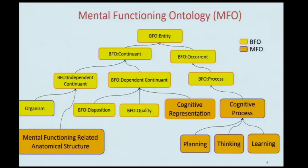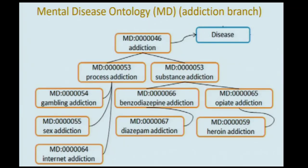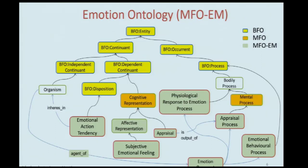There are a series of ontologies developed for this purpose. One is the mental functioning ontology, covering cognitive processes like thinking and planning. The mental disease ontology covers specific sub-kinds of processes — for instance, those manifested in addictive behavior such as gambling, which are parts of the disease cause of gambling addiction disorder. The emotion ontology extends the mental functioning ontology to include not just cognitive representations but also affective representations such as feelings — feeling happy, feeling good — and is of obvious relevance to the ontology of terrorism, since there are quite characteristic kinds of emotions associated with terrorism.